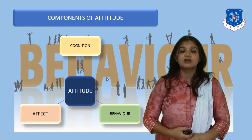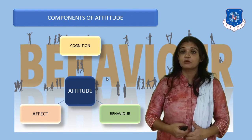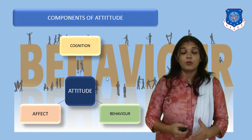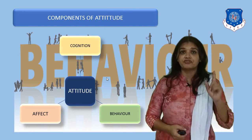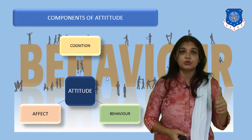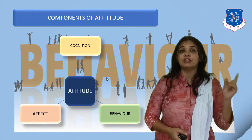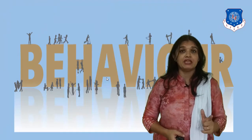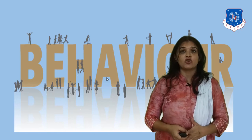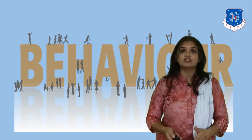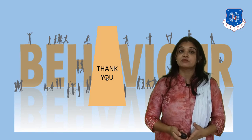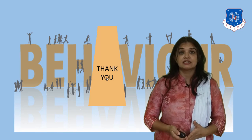To sum it up, today we started with chapter 2 — individual behavior — where we talked about the first factor, attitude. We defined attitude, saw the link between attitude and behavior, learned about the characteristics of attitude, and the components of attitude through the ABC model. I hope you have understood whatever has been taught in this lecture. Thank you.